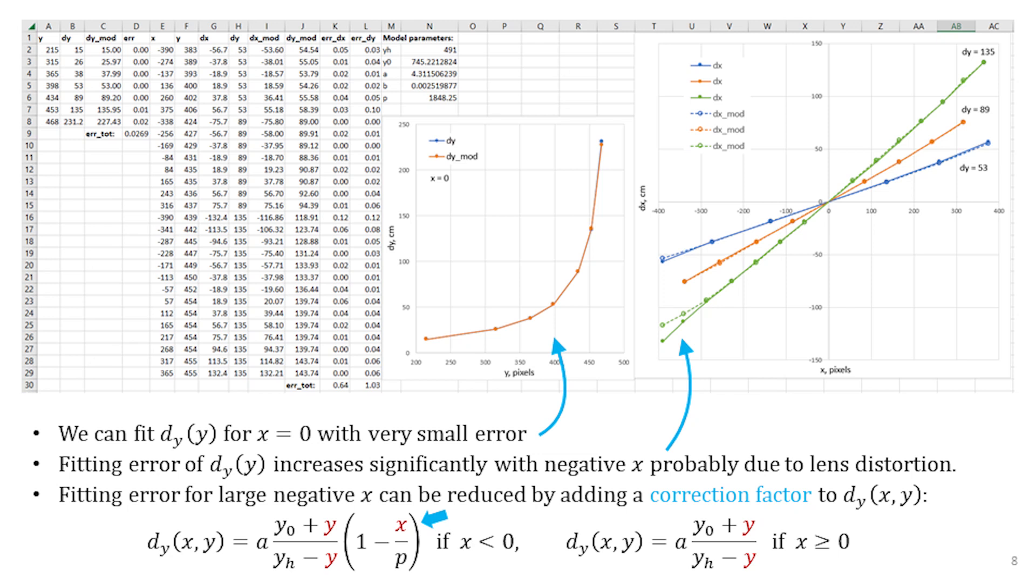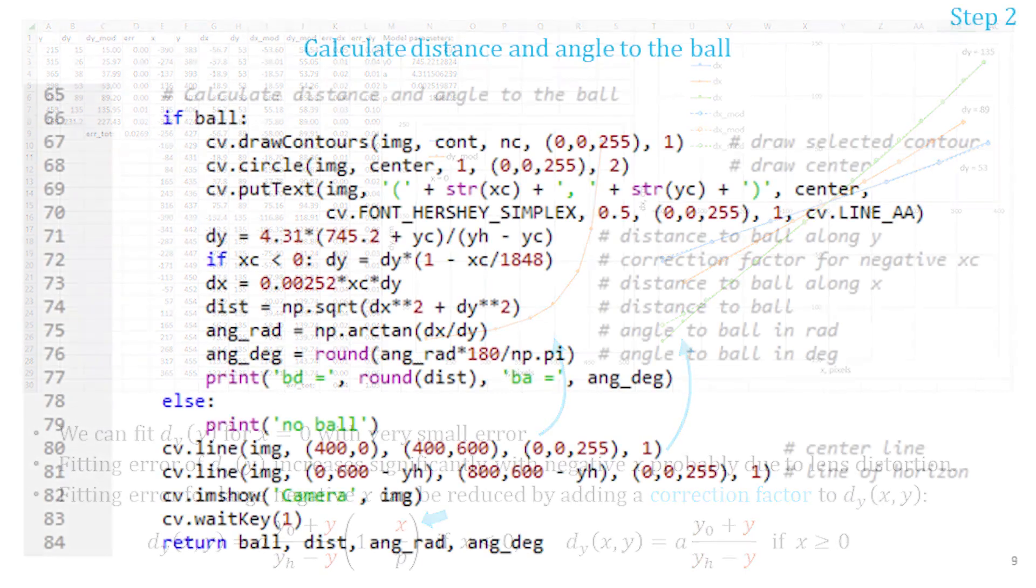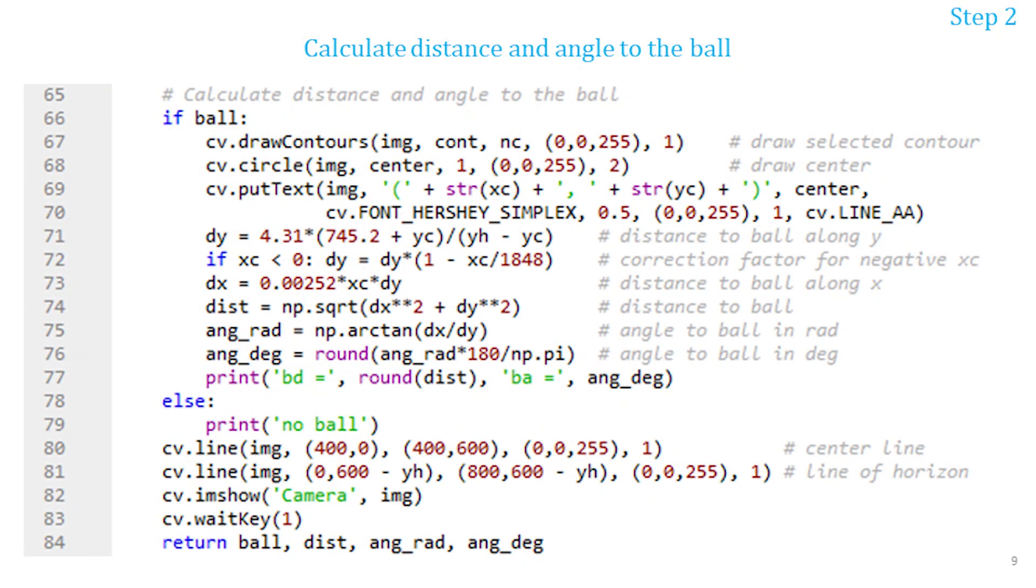While fitting the models for the ball position I noticed that besides the perspective distortion the camera lens was introducing a barrel distortion on the left side of the captured image. I had to add an additional correction factor to the models. The code for computing the ball position on the floor from its coordinates in the image is shown here. I included it in the capture function.